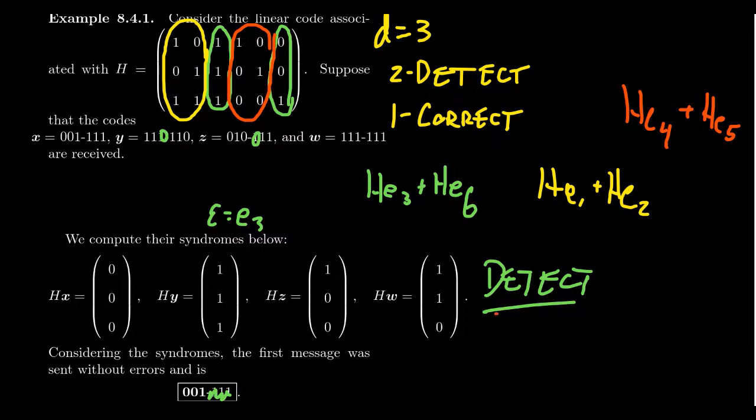So this is what we do. We've detected an error, but we cannot correct it. Therefore, we will request a retransmission of the original message. And this illustrates the point. This code can detect up to 2 errors, but it can only correct up to 1. So there is this gap where error correction isn't always possible, but error detection can still make up the difference.